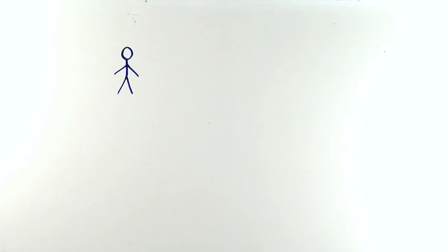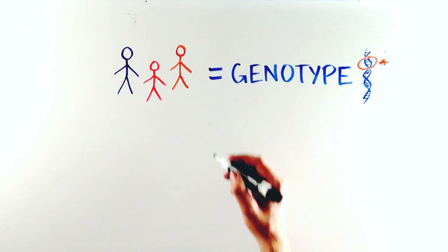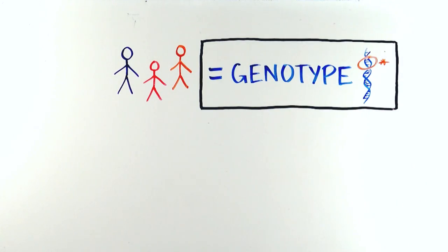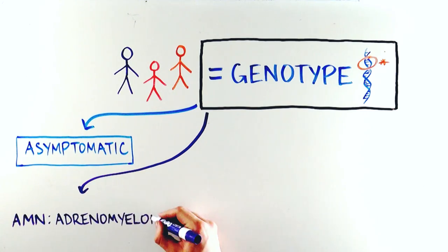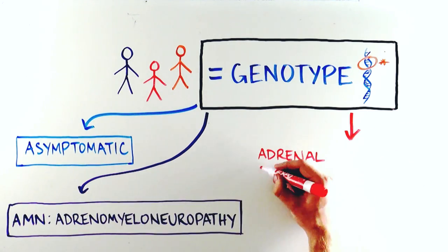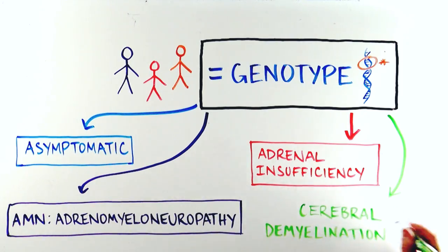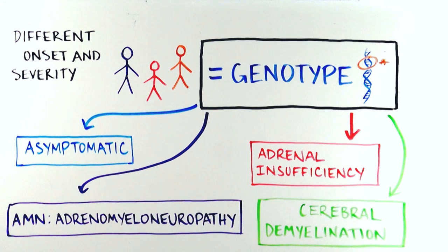Although all ALD patients share a genetic problem, or genotype, the symptoms ALD patients experience can vary greatly, and are grouped into phenotypes. The ALD genotype has four unique phenotypes, which can overlap during a lifetime. The four phenotypes are asymptomatic, adrenomyeloneuropathy, adrenal insufficiency, and cerebral demyelination. The onset and severity of the phenotypes can vary from patient to patient.